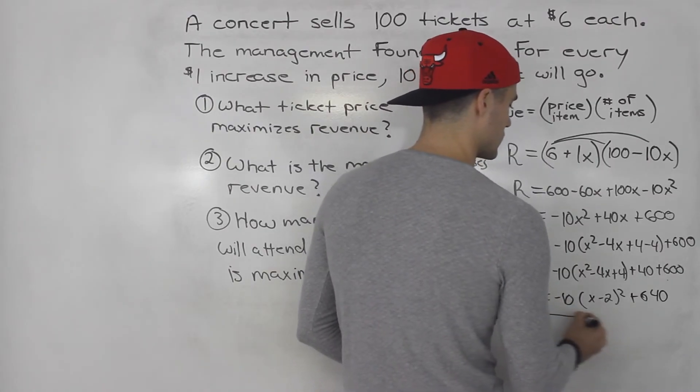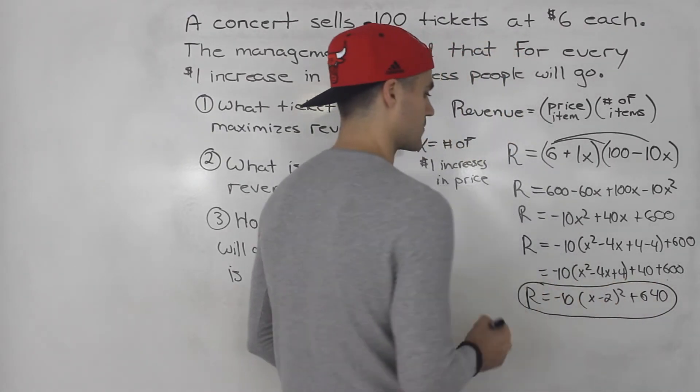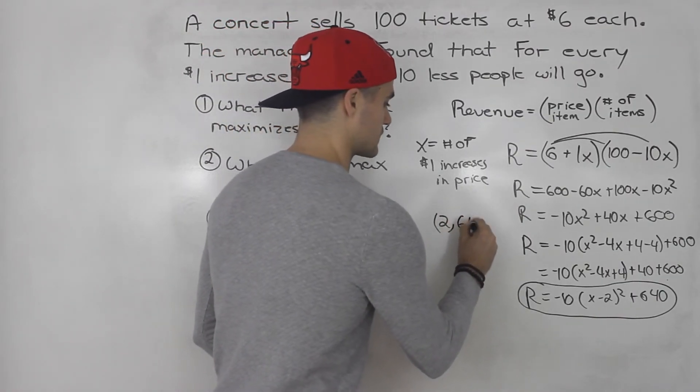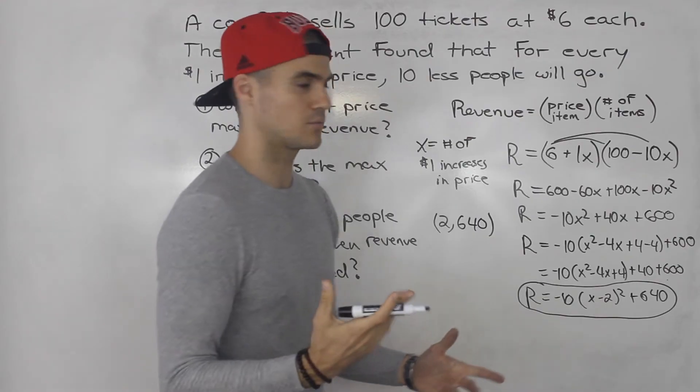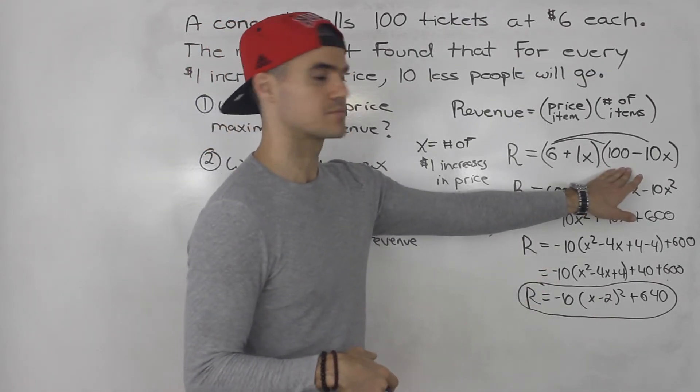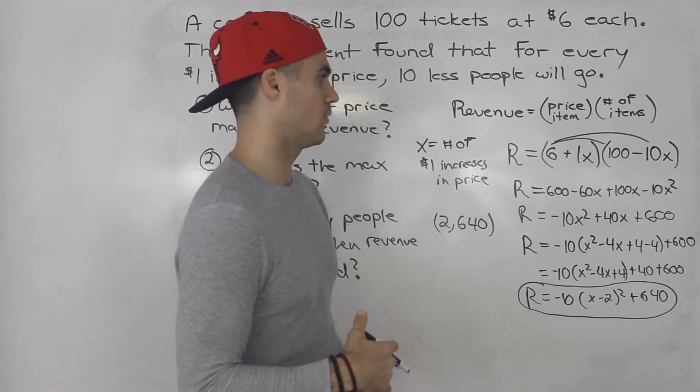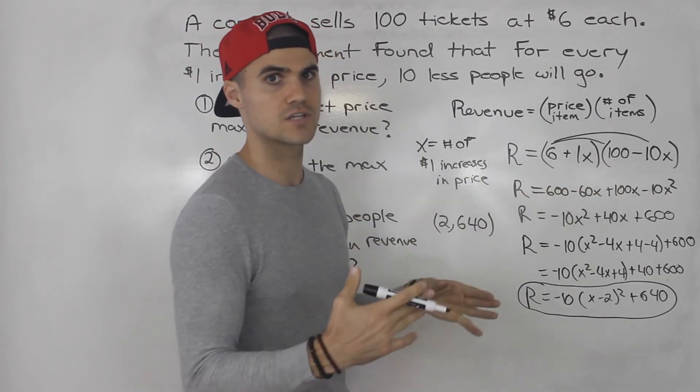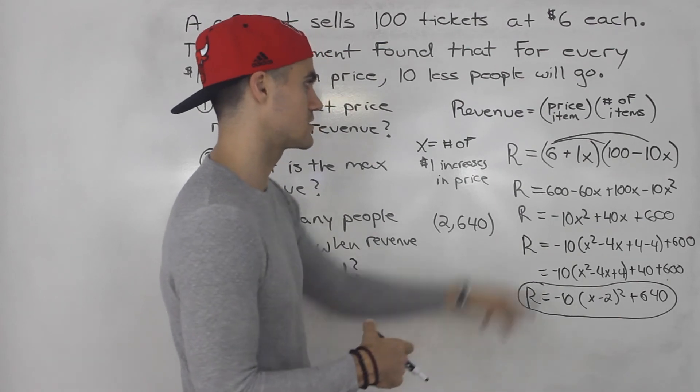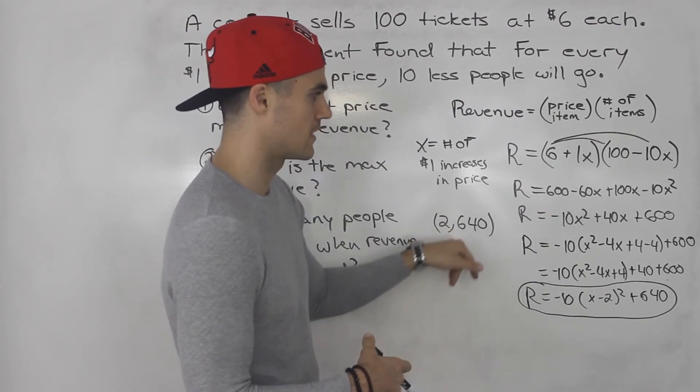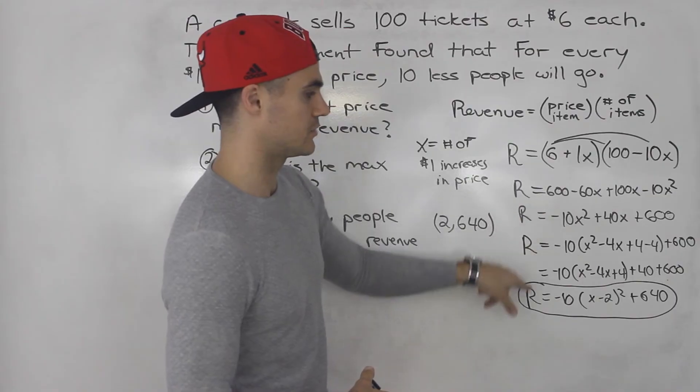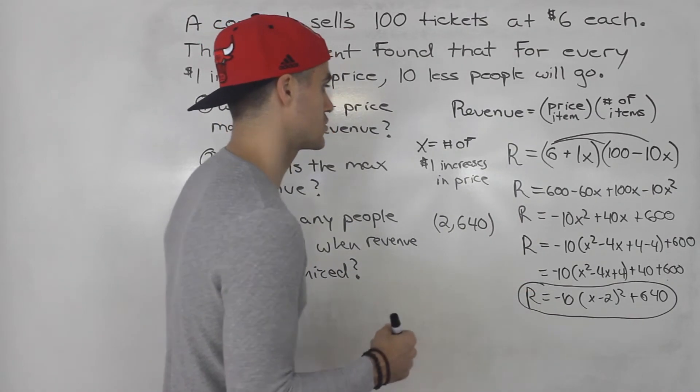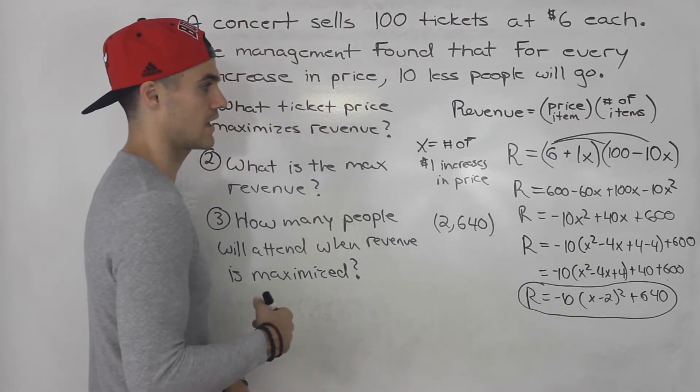That's the revenue function in vertex form. Notice the vertex of this, 2 and 640, which is exactly what we got before when we just found the intercepts. So either way works. You could take the factored form right away, find the intercepts, find the midpoint between them, sub in that midpoint into the function to get the vertex. Or you could expand everything, complete the square and get the vertex. Or you could do both methods if you get this on a test, just to make sure you're getting the correct answer.